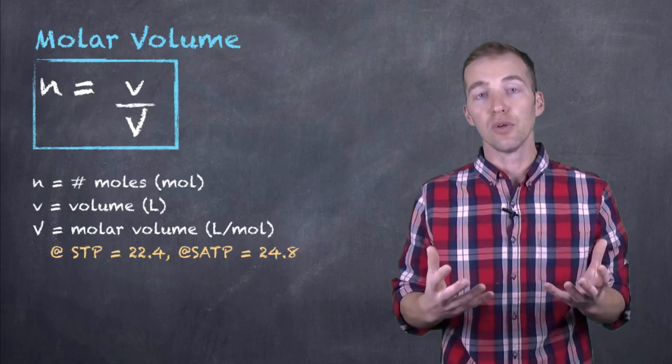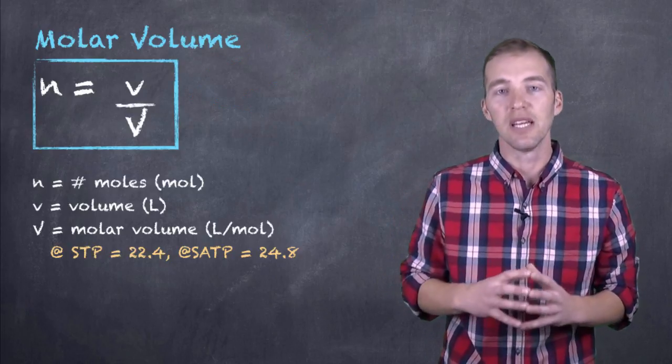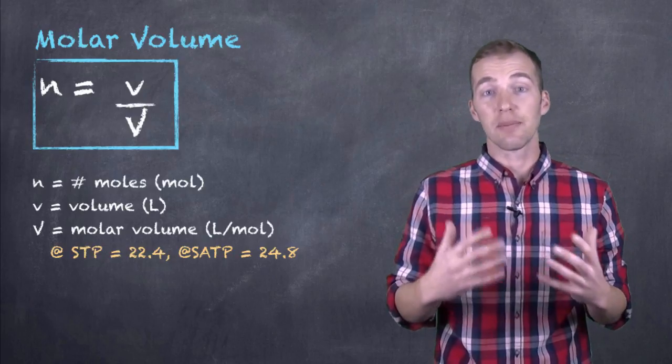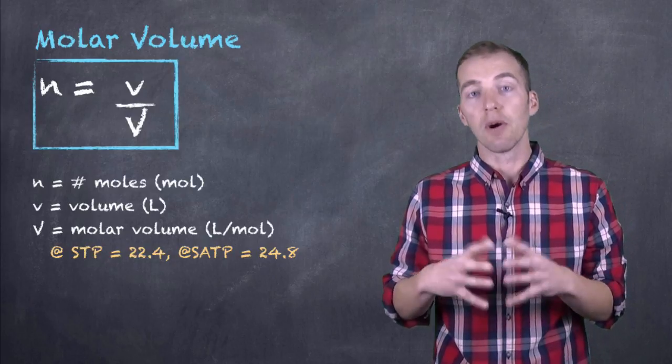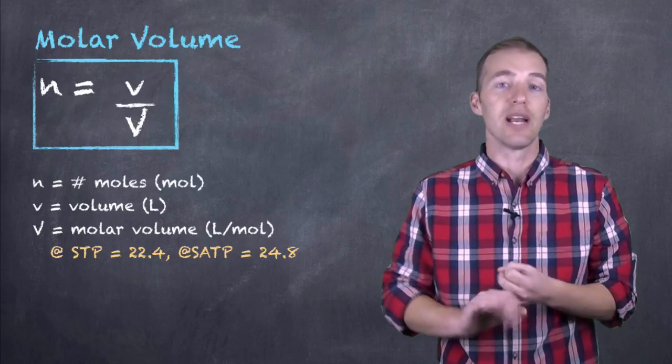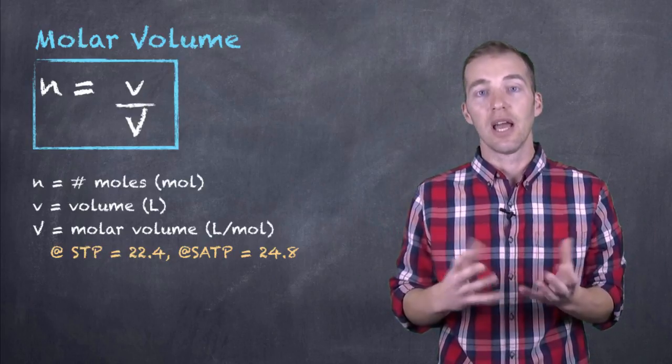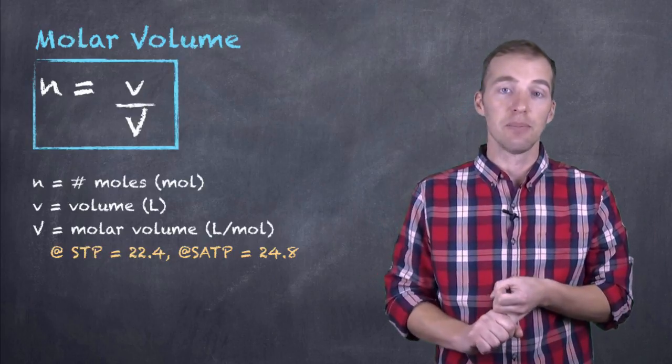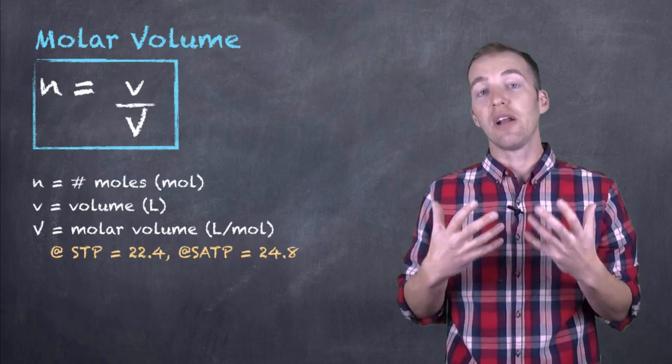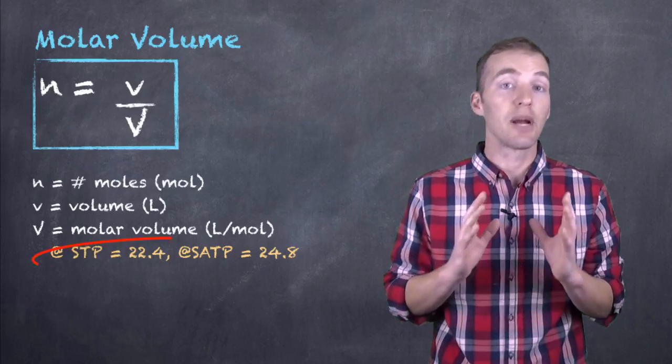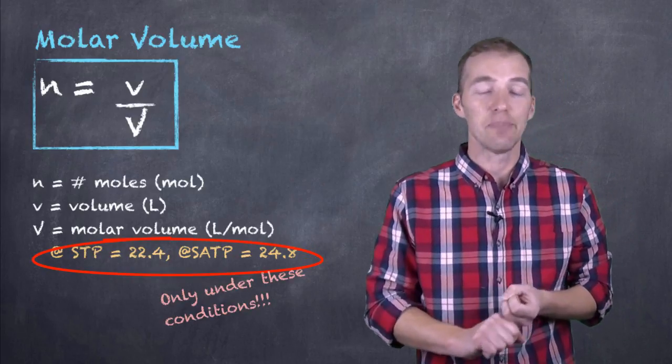Now what this allows us to do is use an equation very similar to the setup of n equals mass over molar mass except this time we're using n equals volume over molar volume. So if we know the volume of one mole at STP or at SATP, if we know the volume of that gas and we know that it's at STP or SATP, we can use the molar volume to figure out how many moles we have. So this is another variation of the ideal gas law but can only be used under STP or SATP conditions.